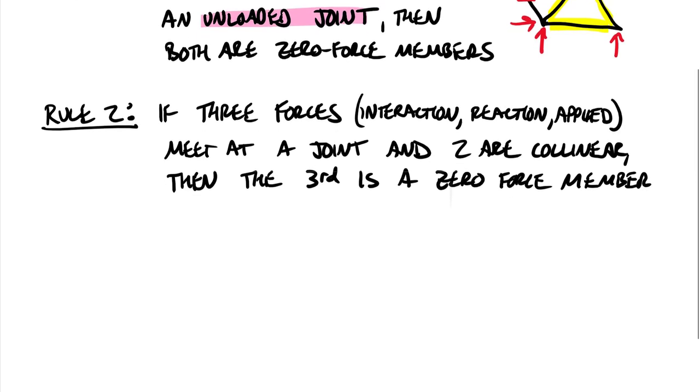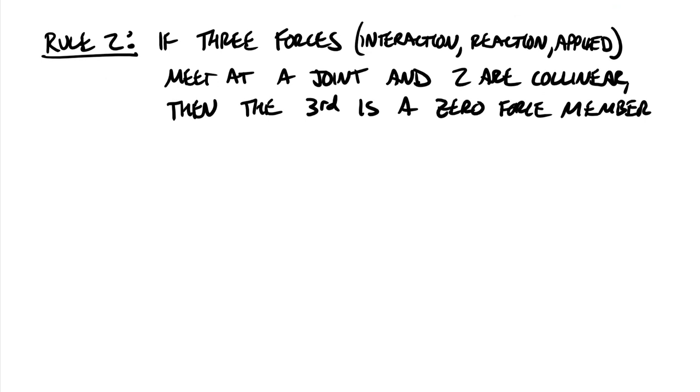I think of this as like the third wheel rule. So if you're heading out with a friend of yours and their significant other and you're rolling solo you're going to feel a little left out. I'm not going to say you're going to feel like a zero but I'm just saying that the other two are collinear. Right there's seeing eye to eye. They're totally in lockstep. And then there's you. Okay so, so this once again is with three forces or members meeting. So let me show you an example here.